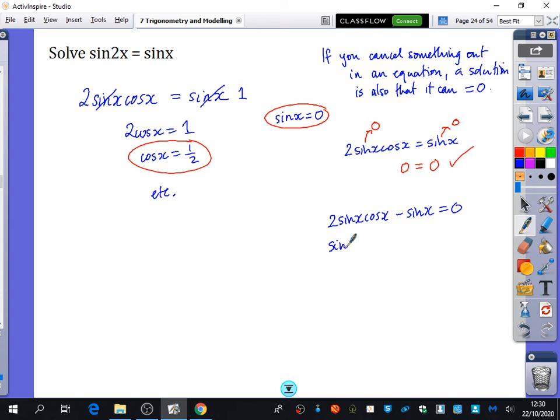Factorize out sin(x) so that I get 2cos(x) minus 1 being equal to 0. Now, the fact it's equal to 0 shows me that either this is equal to 0 or this is equal to 0. In other words, cos(x) is equal to a half.